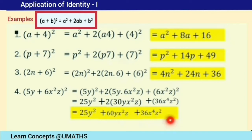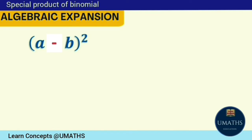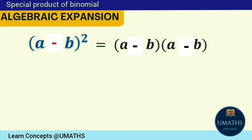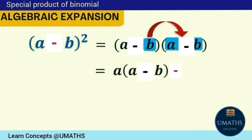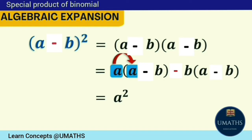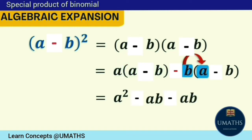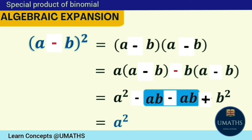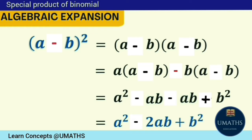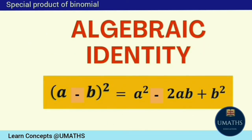Students, I am sure you must have understood the use of a plus b whole square. Now let's move on to the second identity. Similarly, we can derive the second algebraic identity by writing the square of a minus b as a minus b multiplied by a minus b. Expanding by the distributive law: a times a minus b, minus b times a minus b, gives a squared minus ab minus ab plus b squared, which simplifies to a squared minus 2ab plus b squared. So the second identity is: square of a minus b equals a squared minus 2ab plus b squared.